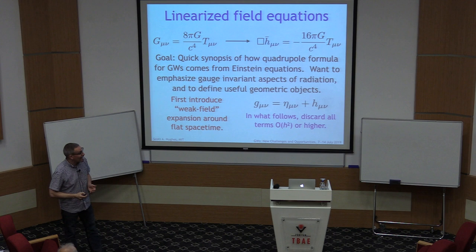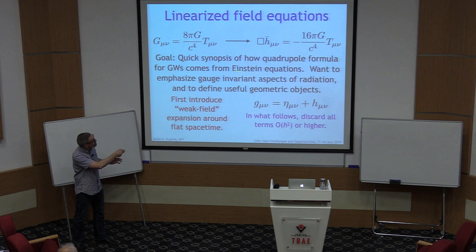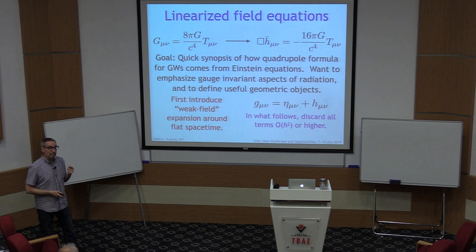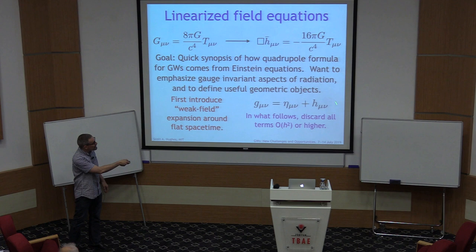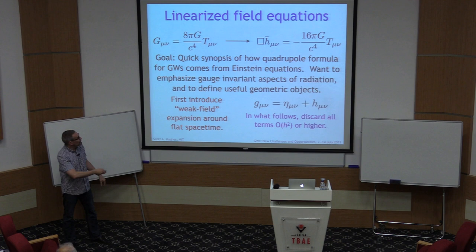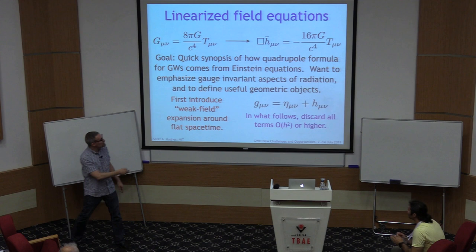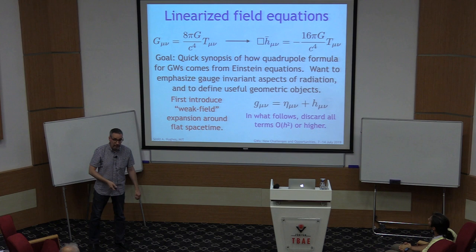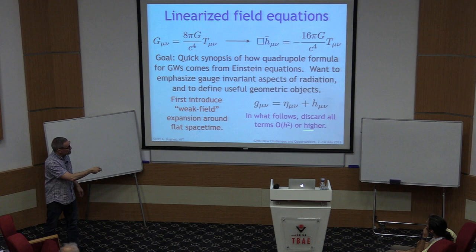A particularly important thing is to emphasize gauge-invariant aspects that describe radiation. Just as in electromagnetism we can choose a particular gauge which tells us about the properties of our potentials, in the same way we can choose gauges characterizing the properties of the space-time metric. We're going to work in the weak field expansion — the idea that space-time is similar to flat space-time plus a little bit else — and ruthlessly discard all terms that look like h-squared or higher.